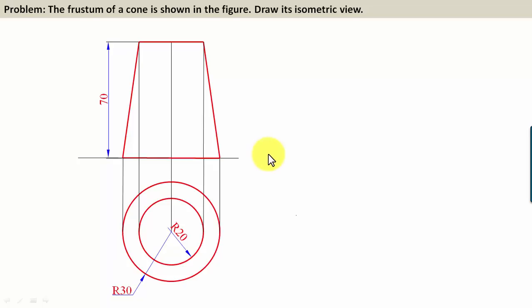the isometric view of the frustum of a cone having a maximum height of 70 millimeters. The circle at the top has a radius of 20, whereas the circle at the bottom—this one which appears as a line in the front view but is actually a circle—has a radius of 30 millimeters. That's the front view and the top view, and for this we need to make the isometric view.